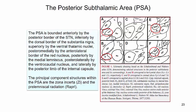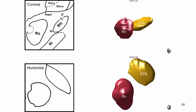The principal component structures within the PSA are the calozona inserta and the prelemniscal radiation. However, in reality we are probably targeting a cerebelothalamic fiber bundle passing through this area. It must be stressed that we are not within the STN here. The term caudal calozona inserta is used for the part of the calozona inserta between the STN and the red nucleus — this is not the part of the calozona inserta overlying the STN where you sometimes get the best effect of what is called STN DBS.